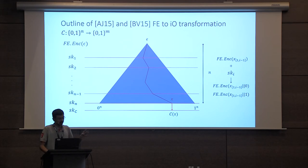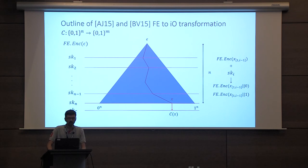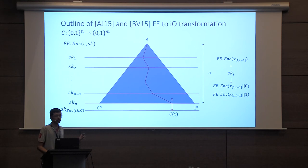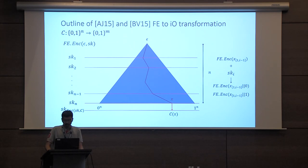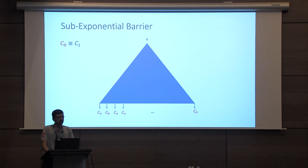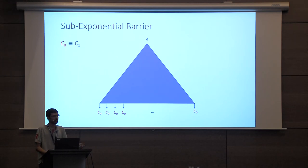However, the construction as described does not give full-fledged IO, because the final functional secret key SKC is not guaranteed to hide the circuit C. In order to hide the circuit, the approach encrypts the circuit using a symmetric key and then adds the symmetric key to the initial ciphertext.